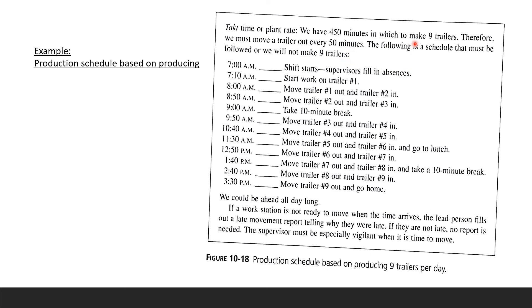When you take a look at it inside, you're going to see takt time and plant rate. In this example, we're going for 450 minutes in which to make nine trailers. So we must move a trailer every 50 minutes. The following is a schedule for this takt time and plant production. At 7 a.m. you do this, at 7:10 you do that, and so on all the way to 3:30.